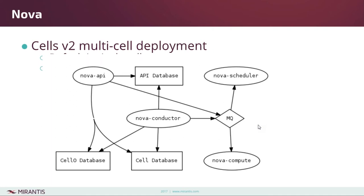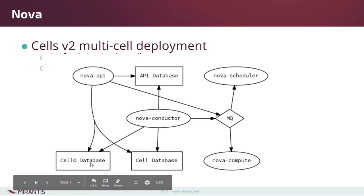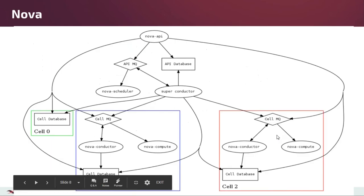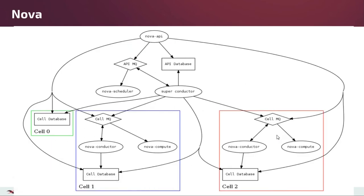The Nova API communicates with the API database and also with Nova Scheduler through the message queue. The message queue provides communication between the scheduler and Nova Conductor, which communicates with the cell database that notes where workloads are scheduled, and the cell-zero database which records workloads that failed to be scheduled. The message queue also relays messages to Nova Compute.